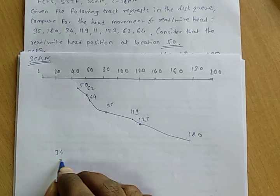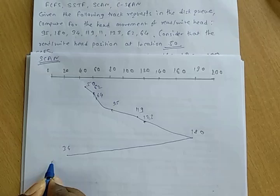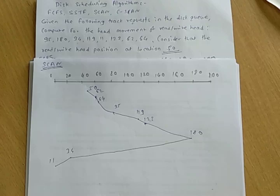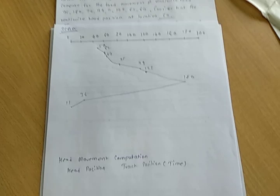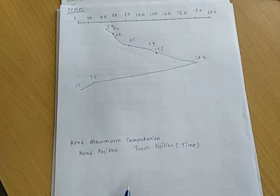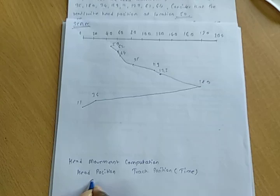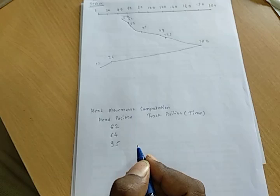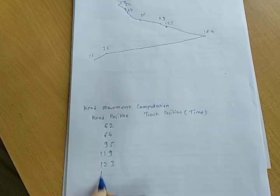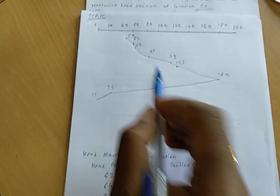All 8 nodes are visited with the help of SCAN. Similar to FCFS, we calculate the average seek time. Visited nodes in sequence: 62, 64, 95, 119, 123, 180, 34, 11. Seek times: 62 minus 50, 64 minus 62, 95 minus 64, 119 minus 95, 123 minus 119, 180 minus 123, 180 minus 34, and 34 minus 11.